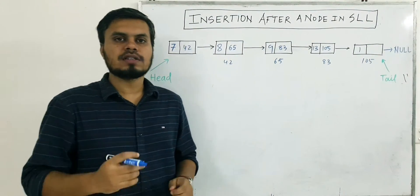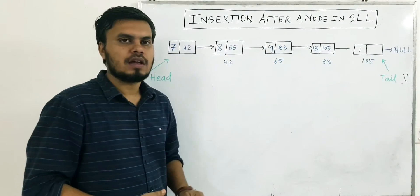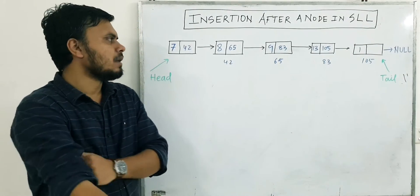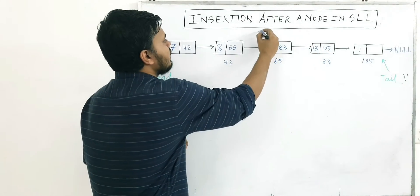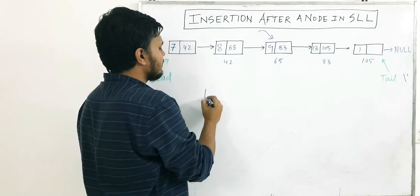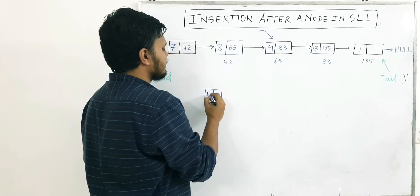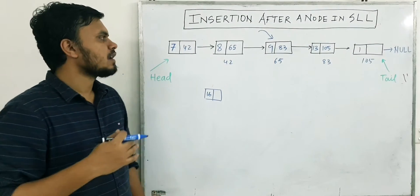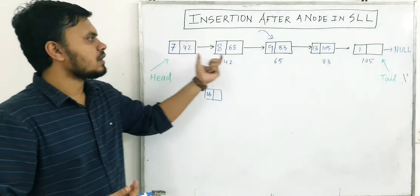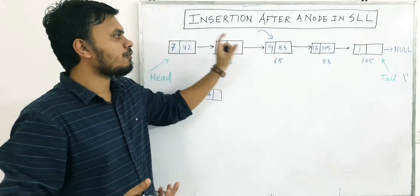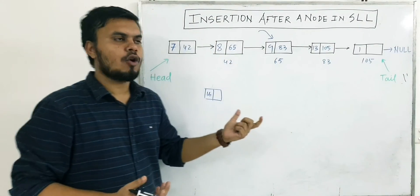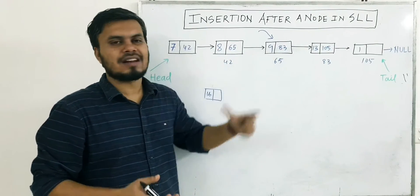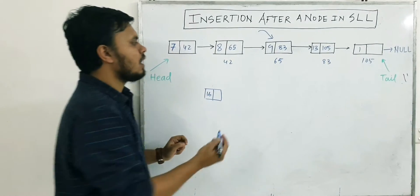Now let's learn how to insert a new node after a given node. This case is slightly trickier in comparison to the other two cases. Let's say I want to insert a new node — let's call it node 16 — after a specific node. It's basically a three-step process where the first step is to find out where that node is. To find it, you have to loop through the entire list, and once you find it, you store it in a variable.